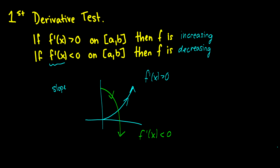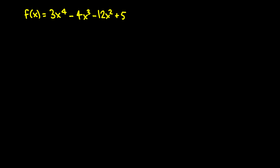Using this test, we are going to take our functions and find out where they are increasing and decreasing. Here we have an example: f(x) = 3x⁴ - 4x³ - 12x² + 5. First we take our derivative, which gives us 12x³ - 12x² - 24x.